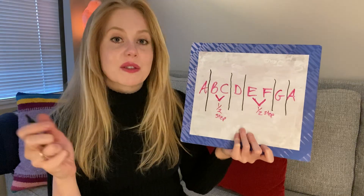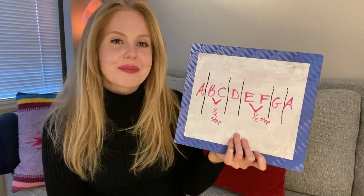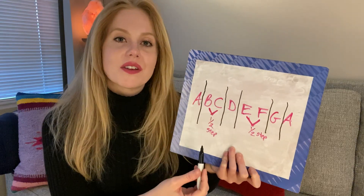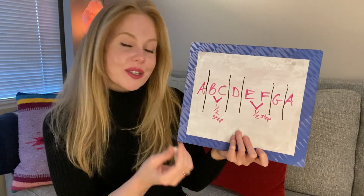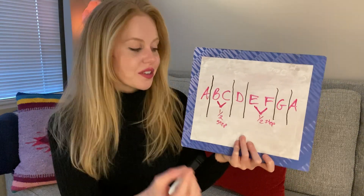Each of these black lines here — or think of them as black keys on the piano — has two potential names. It could be the sharp version, or it can be the flat version. They're the exact same key, so it has two potential names.